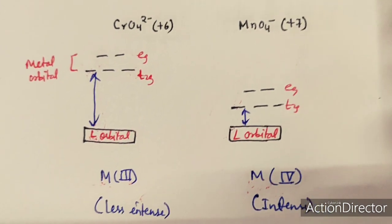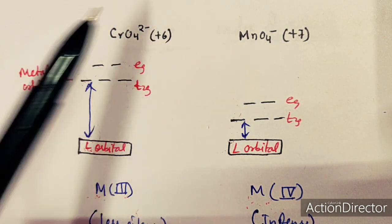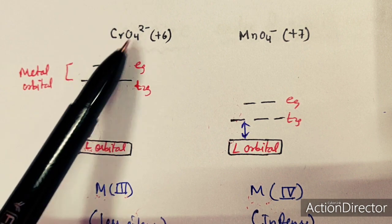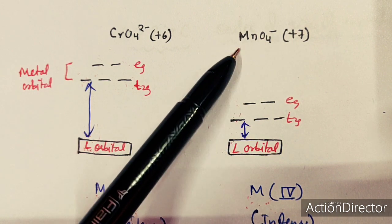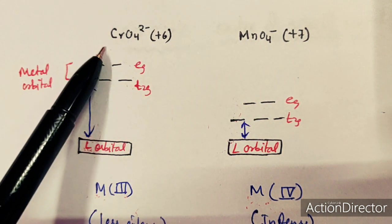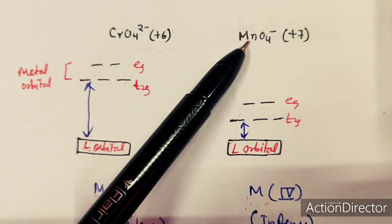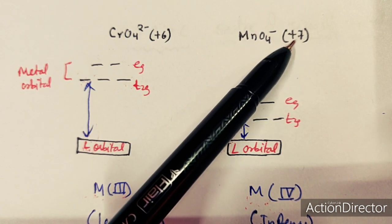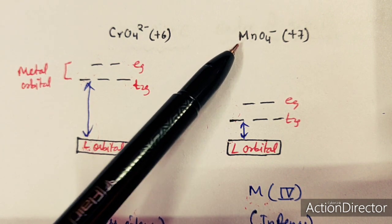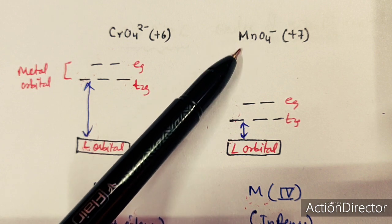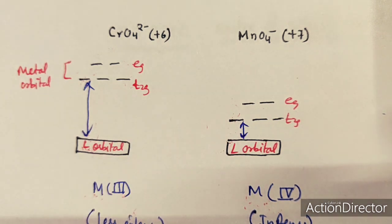Another example: CrO₄²⁻ and MnO₄⁻. The oxidation state of Cr is +6 and Mn is +7. KMnO₄ is purple while CrO₄²⁻ is yellow — the MnO₄⁻ is more intense. This is because the higher oxidation state of Mn decreases its orbital energy, decreasing the gap between ligand and metal orbitals, making charge transfer easier.